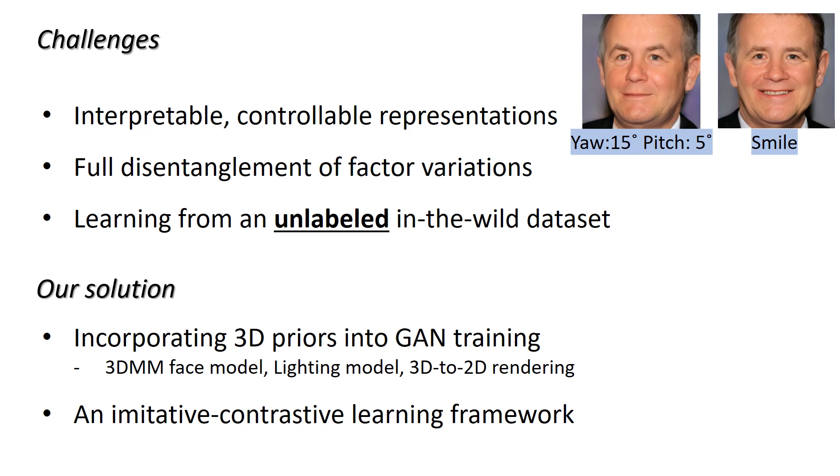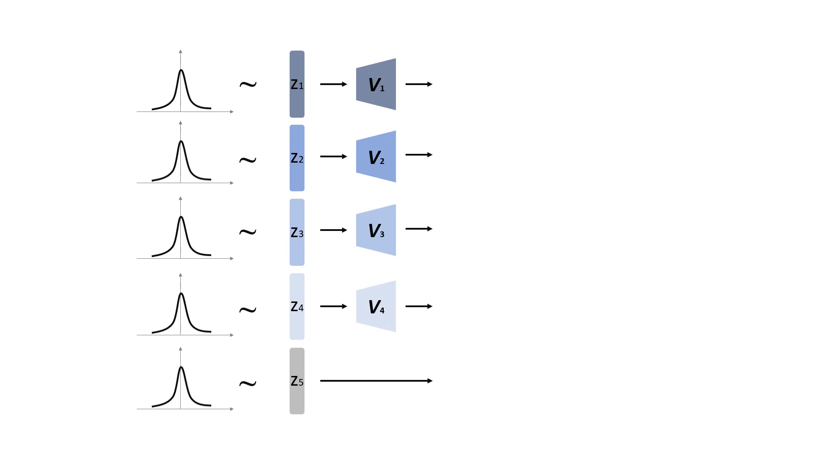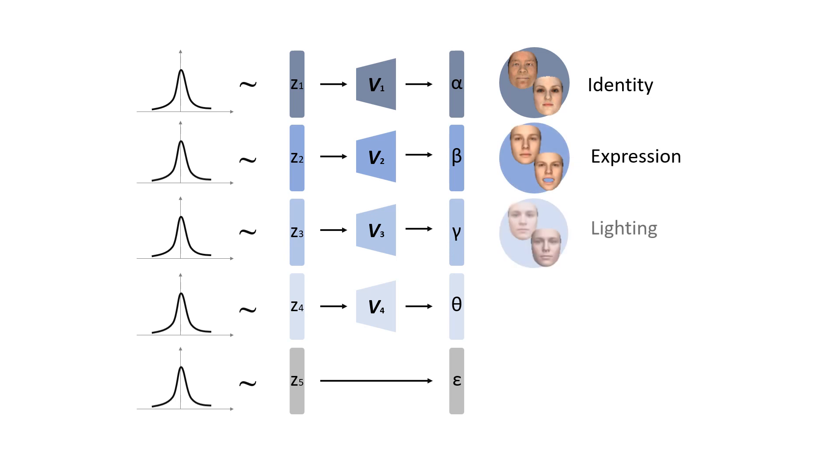Specifically, we start from multiple independent variables zi sampled from normal distribution. Then, we use network vi to map each zi to another space we call lambda space, where each variable has physical meanings of identity, expression, lighting, and pose respectively. An additional random noise is introduced to account for other properties such as background.